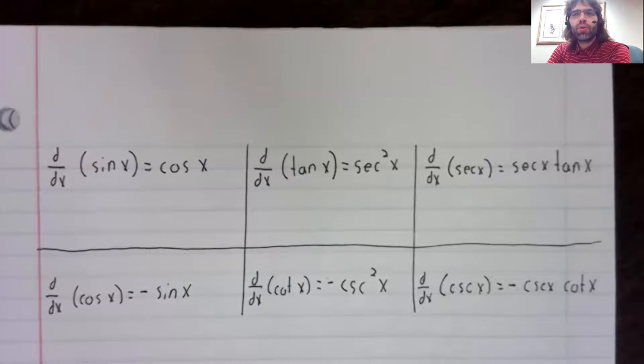Did you remember, by the way—probably not—it was way back in the first week in section 1.3 when we were doing trig review, I said that sine, cosine, and tangent were the most important trig functions, and that secant came next.